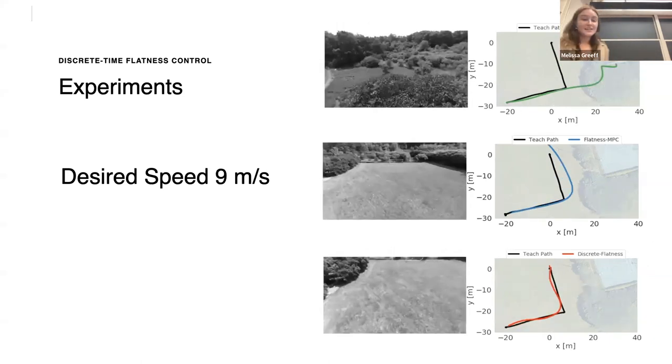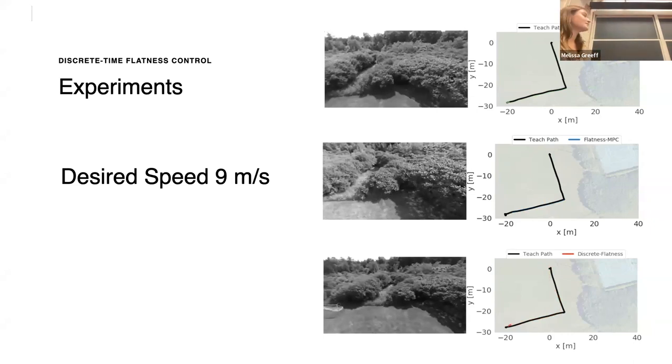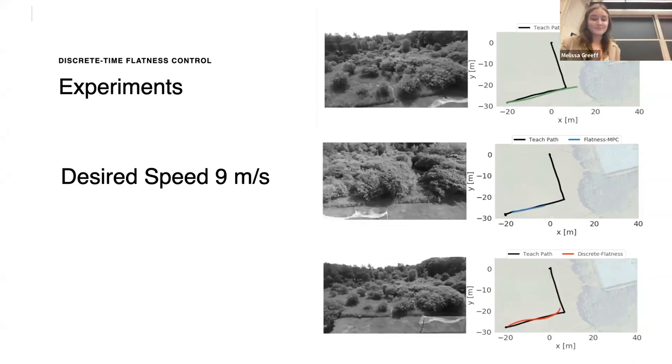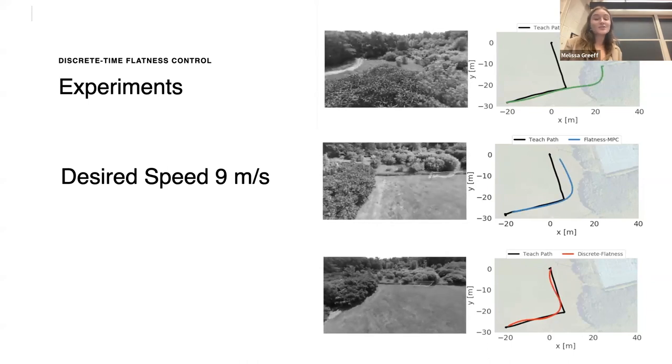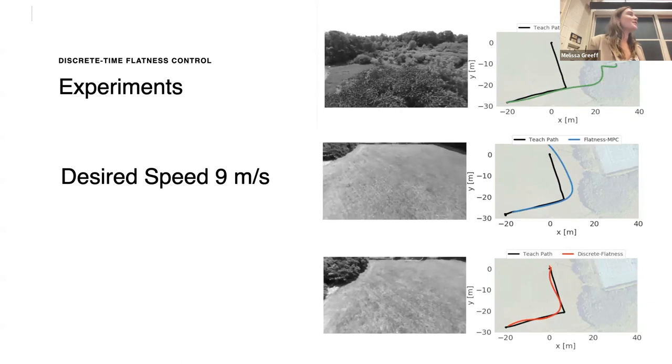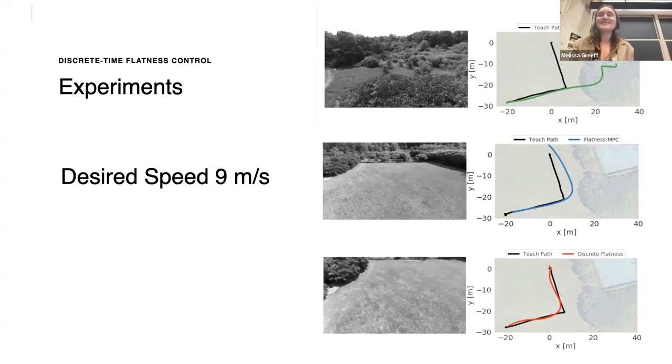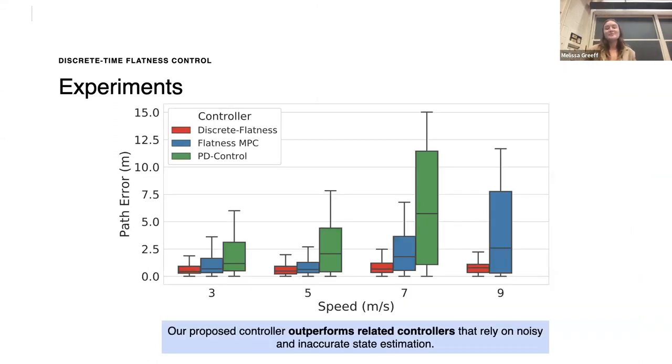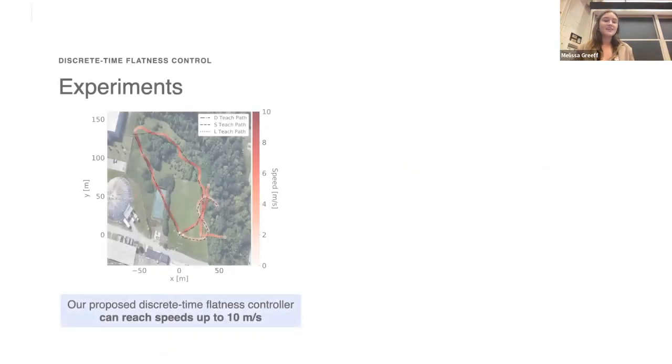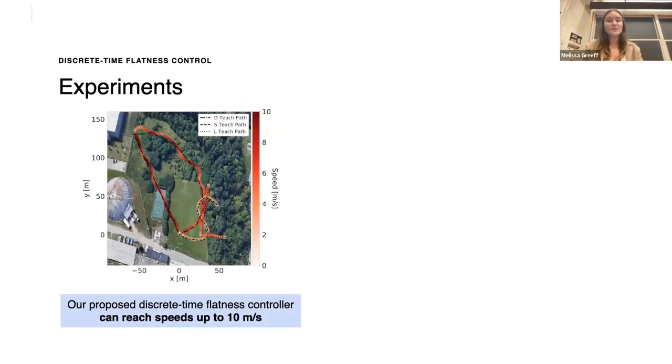So we can also look at a desired speed of nine meters per second. In the PD control case, we actually went unstable and I had to take over to avoid crashing. So we compare the path error averaged over multiple trials for increasing speed. So three, five, seven, nine meters per second. And we see that our discrete flatness outperforms related controllers that rely on inaccurate state estimation. Our proposed controller can reach speeds up to 10 meters per second, and we had some fun flying DSL around UTIAS.